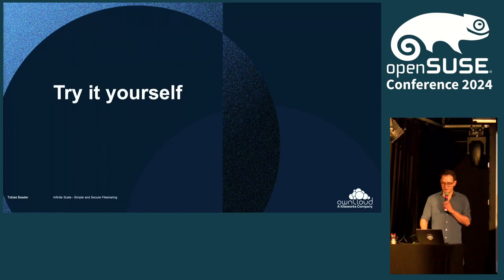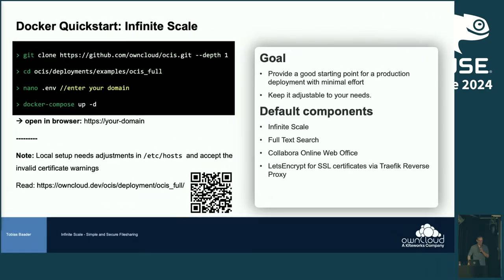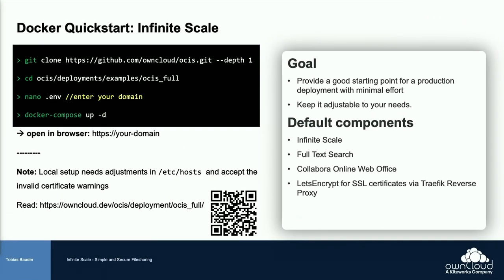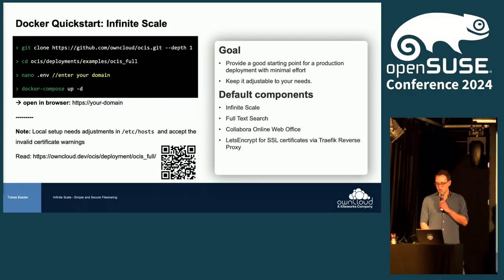How can you try it yourself? Very simple. The developers prepared a Docker Compose image. You just need to clone the repo, edit the environment variable — basically just enter your domain if you're fine with the defaults — and you get Infinite Scale core, full-text search, Collabora for full-fledged Web Office, and a Let's Encrypt SSL certificate. It takes maybe some minutes to get up and running. Note: if you try this on your local machine, you need to edit your /etc/hosts file and accept the invalid certificate warnings.